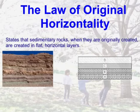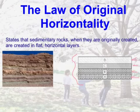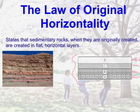One of our two laws is the law of original horizontality, which states that sedimentary rocks, when originally created, are created in flat horizontal layers. So if you see a diagram like this, you know this is how they were originally laid down — layer A, then B, then C, then D. If you look out in the field at actual sedimentary rock layers, you'd see quite flat layers without much waviness, because they were laid down in just this fashion.